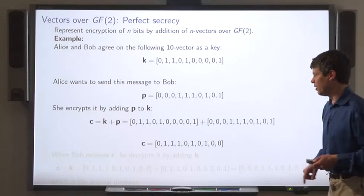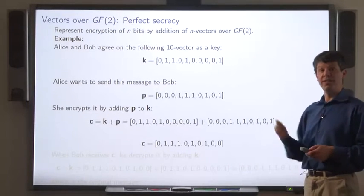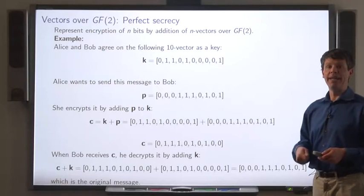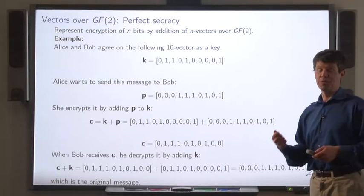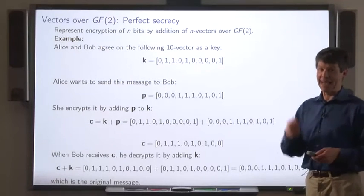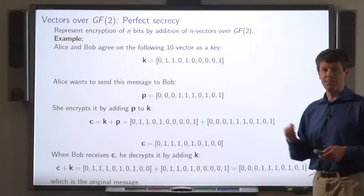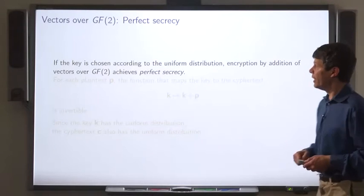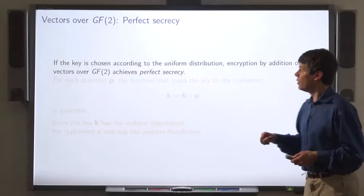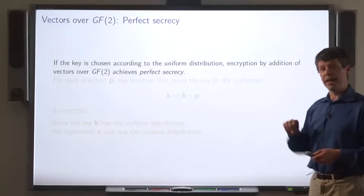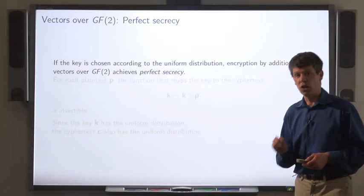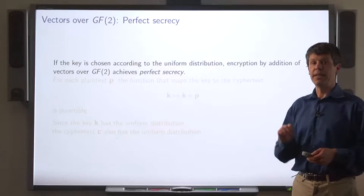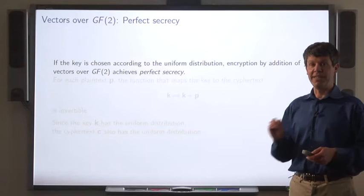So here's the ciphertext. When Bob receives C, he can decrypt it by subtracting — which is the same as adding in GF2 — the key, and he gets back the original message. Now I claim that if the key is chosen according to the uniform distribution, this scheme is perfectly secret.